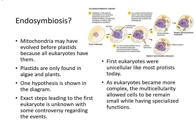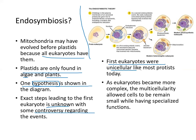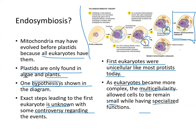Mitochondria may have evolved before plastids because all eukaryotes have mitochondria, while chloroplasts are only found in algae and plants. The exact steps leading to the first eukaryotes are unknown and controversial. First eukaryotes were unicellular like most protists today, and as eukaryotes became more complex, multi-cellularity allowed cells to remain small while having specialized functions. The endosymbiotic theory posits that mitochondria and chloroplasts were engulfed and became modern photosynthetic eukaryotes.